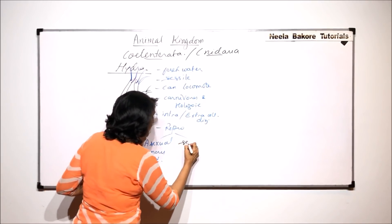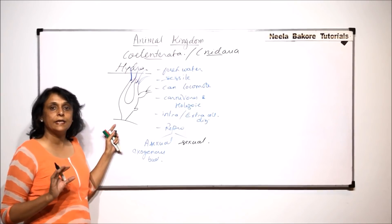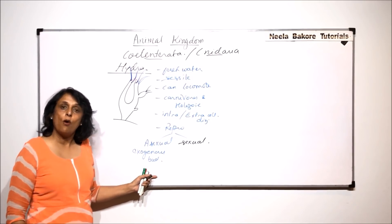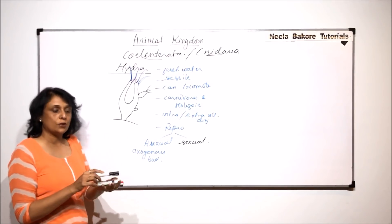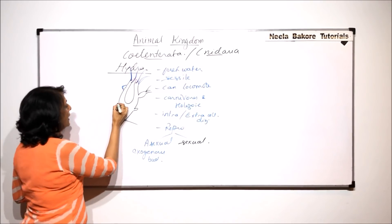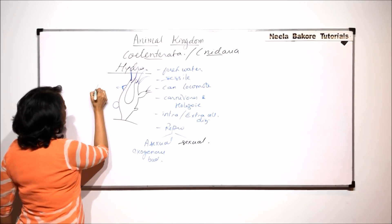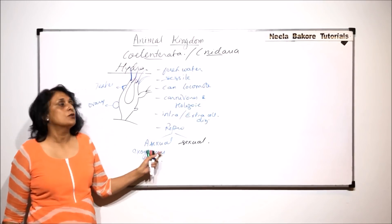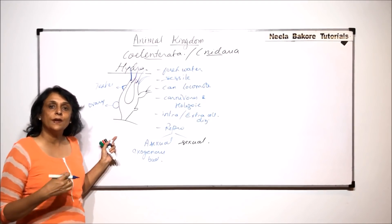Sexual reproduction is also very common, and Hydra can be unisexual or bisexual. That means there can be Hydra having only testes, or only ovaries, or having both sex organs — that is, they can be hermaphrodite. If they have both sex organs, the testes are triangular structures present on the upper part of the body, and the ovaries are slightly spherical structures present on the lower side.